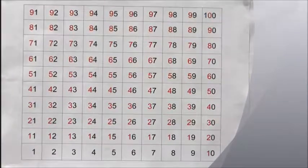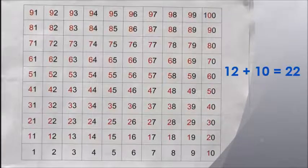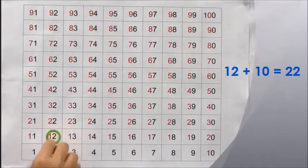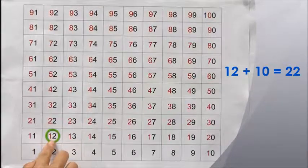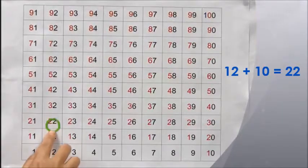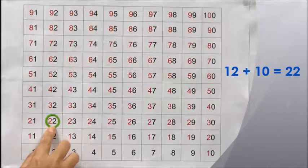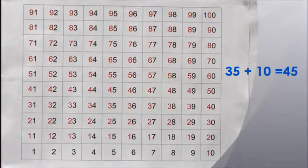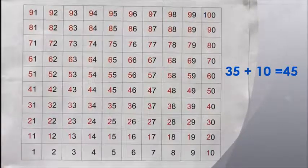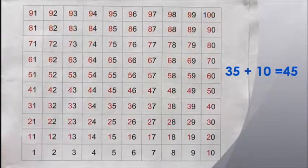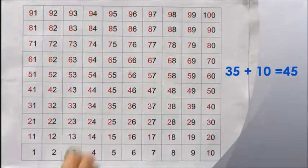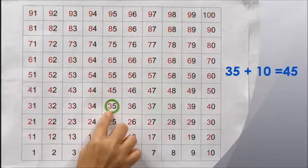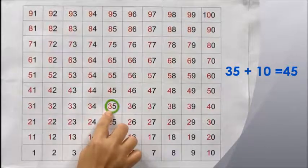12 plus 10 equals 22. 12 plus 10 is 22, which is the number just above 12. 35 plus 10 equals 45. 35 plus 10 is 45, which is the number just above 35.